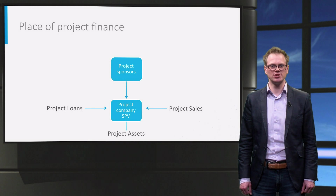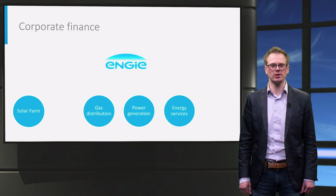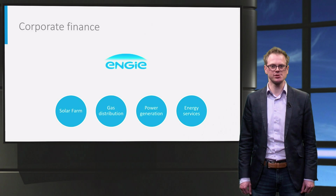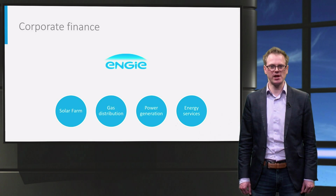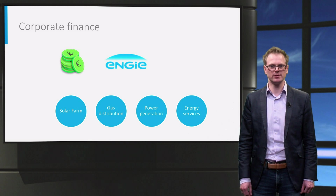Imagine that ENGIE decides it wants to undertake a new power project — for example, building a large solar farm in the Netherlands. Once successful, the solar farm may be expected to sell its electricity through the Dutch public grid. As it is a very large farm, ENGIE might expect its development to cost many millions of dollars. ENGIE now has two choices: to fund this investment from its corporate funding, or to seek dedicated funding for this through a project financing.